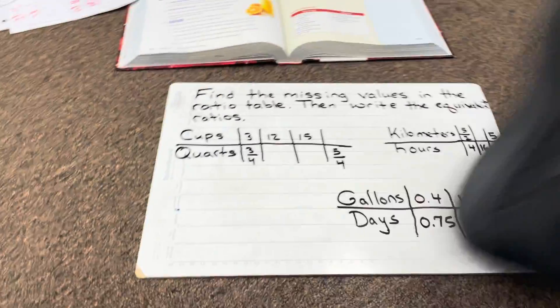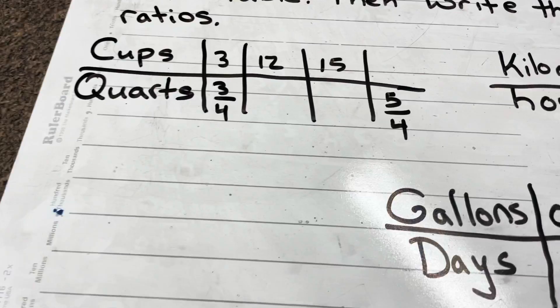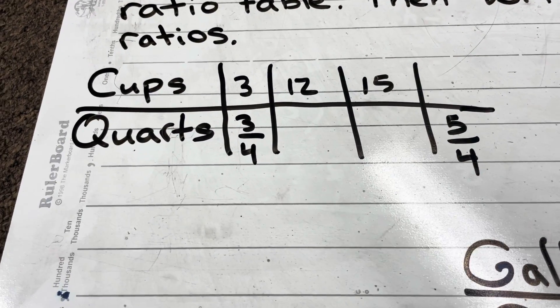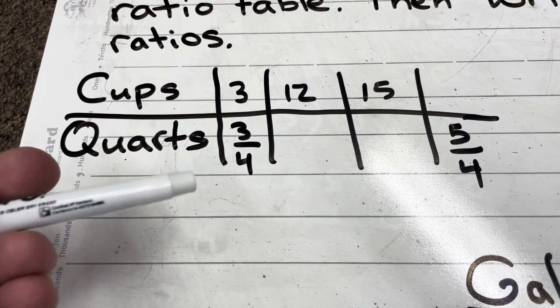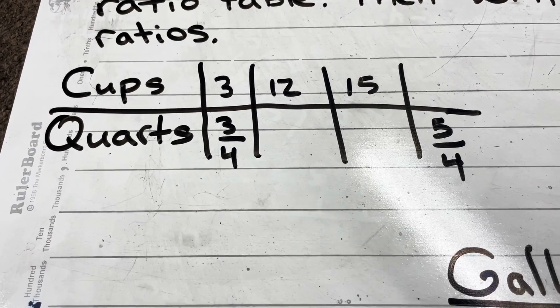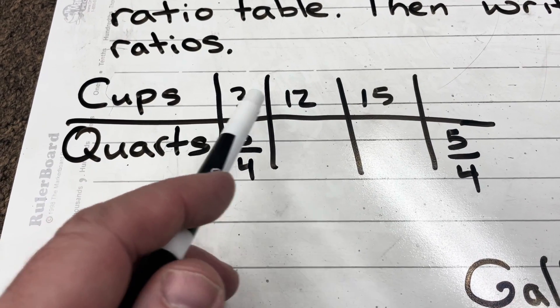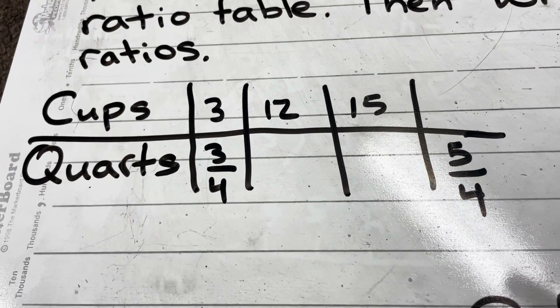I'm going to go ahead and get the calculator because you might want to plug some things in. Looking at cups and quarts, there are different approaches. I can think about what I did to the cups to get the quarts, or I can think about what I did to 3 cups to get 12 cups. We'll look at it a couple of different ways.